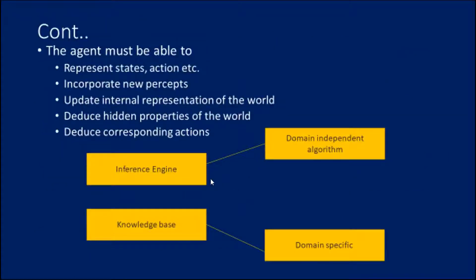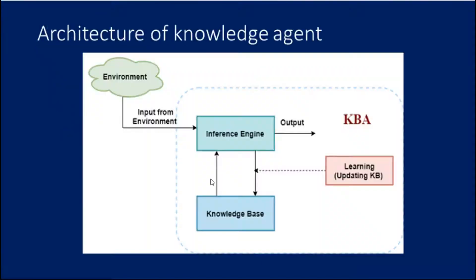Now let's see the architecture diagram of a knowledge-based agent. The agent must be able to represent actions, states, new percepts, and internal representations. It deduces hidden properties of the world and deduces corresponding actions. The diagrammatic representation shows the inference engine and the knowledge base as the two main parts. The inference engine represents a domain-independent algorithm, whereas the knowledge base represents domain-specific content.